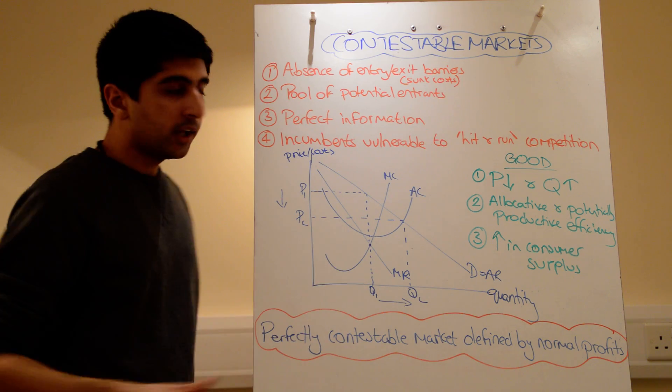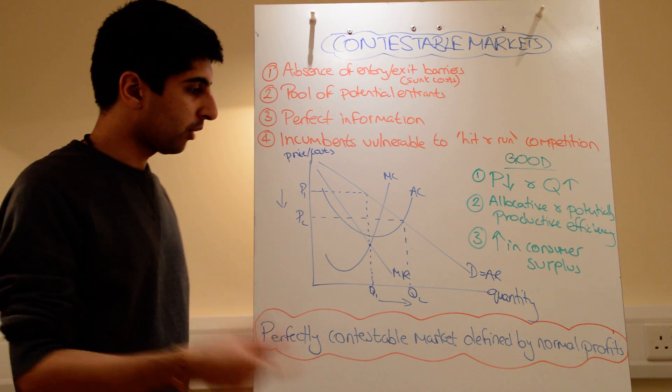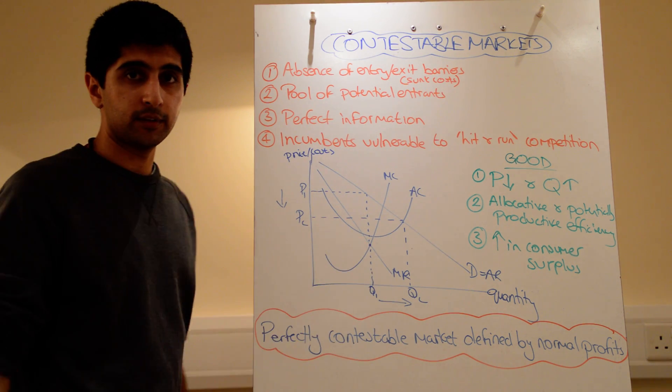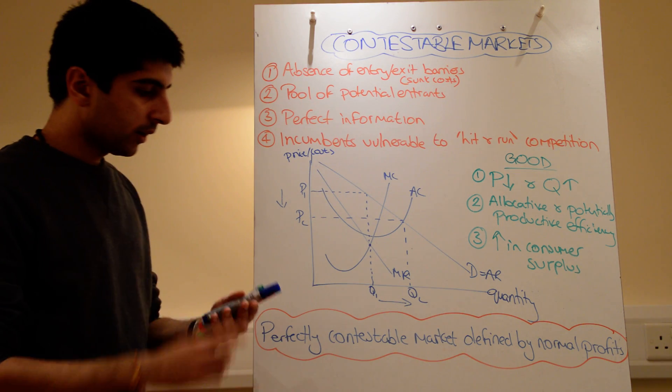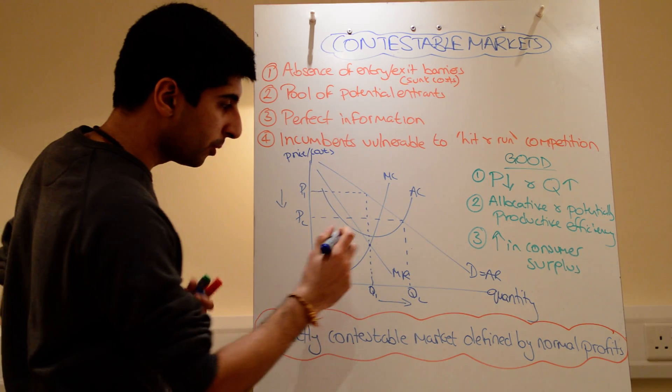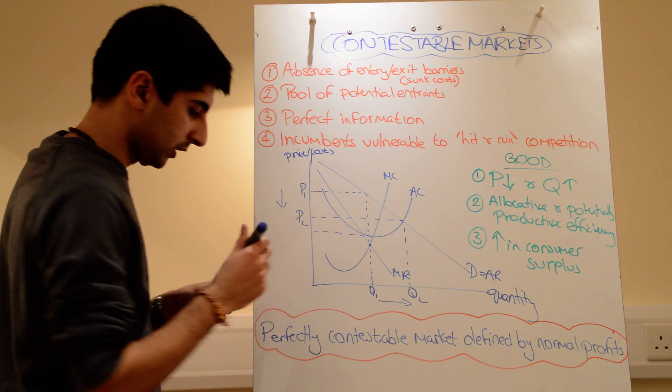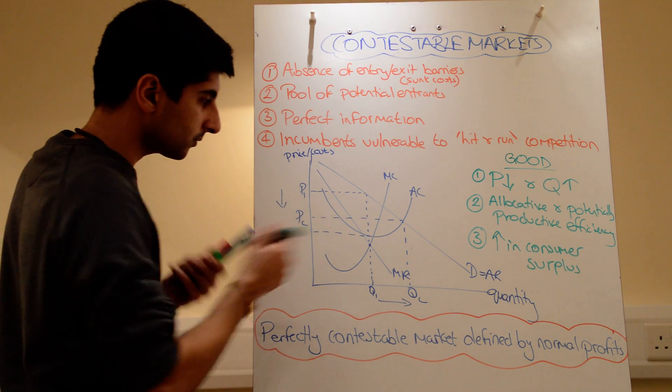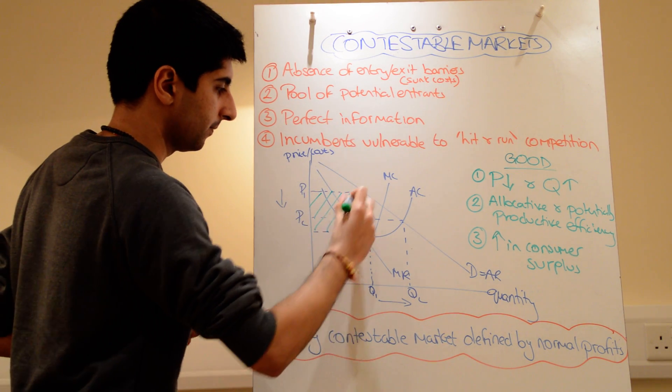At Q1, P1, that's what a normal monopoly would price and produce. The profit maximizing level, MC equals MR. And in doing so, it will make supernormal profits of, I'm doing green, this entire area.